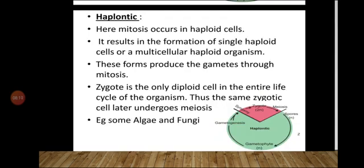Next is Haplontic. Here, Mitosis occurs in haploid cells, resulting in the formation of a single haploid cell or a multicellular haploid organism. This organism produces gametes through Mitosis. The zygote is the only diploid cell in the entire life cycle, and this zygote later undergoes Meiosis. Examples of Haplontic life cycles are algae and fungi.